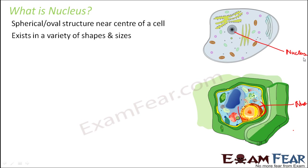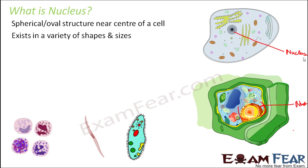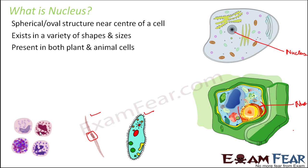Talking about the shapes of nucleus, generally they are rounded but they can also be oval shaped or bean shaped. For example, if you look at the smooth muscle fiber cells, the nucleus is quite elongated. Again if you look at blood cells, you can see the nucleus is lobed — they are in two lobes. So the shape of the nucleus varies from one cell to another. Talking about size, generally cells which are larger in size have larger nuclei whereas smaller cells have smaller nuclei. They are present in both plant and animal cells.